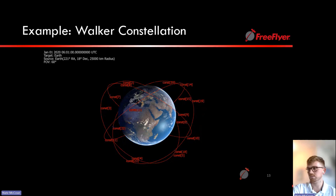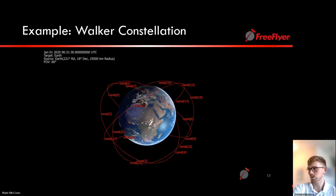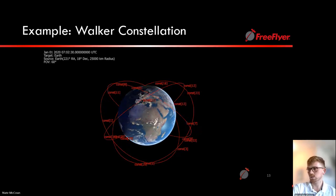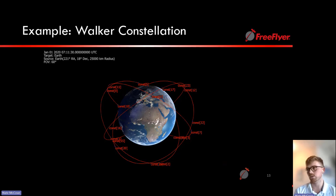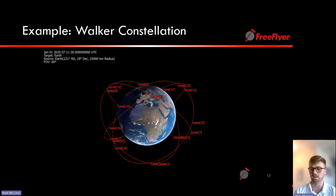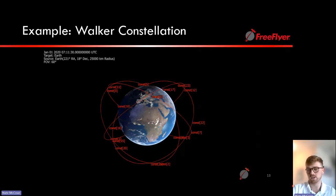Finally, we propagate the constellation for two days using the step command, which propagates the entire formation at once, and the view command to visualize in 3D. We see four planes of spacecraft with six satellites per plane, spaced across the full 360-degree RAAN range and with true anomaly spacing within each plane. We can view each spacecraft with orbit tails and 3D models; additional sensors on board would also appear in this 3D representation.